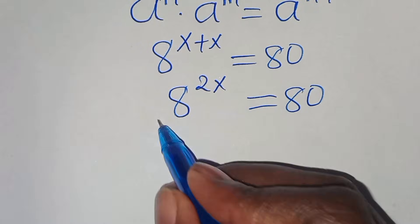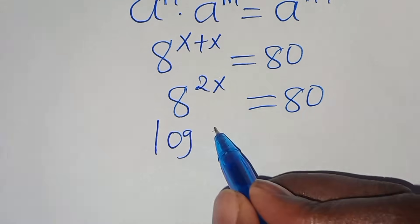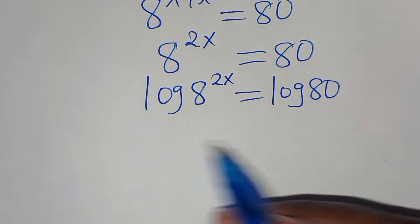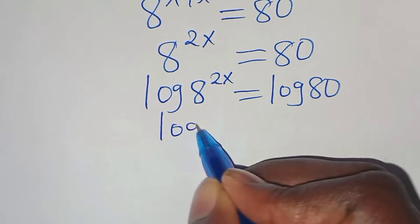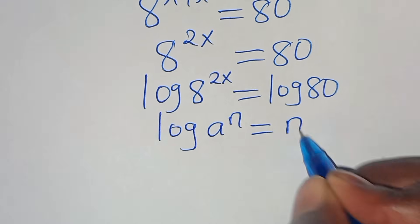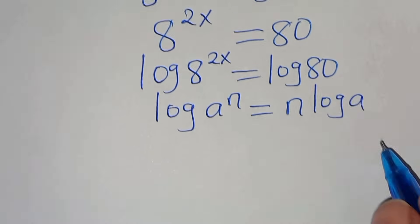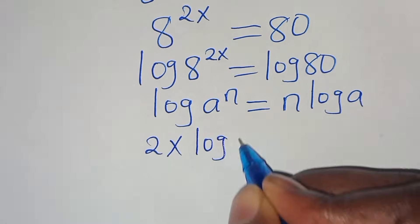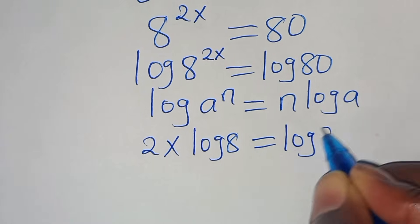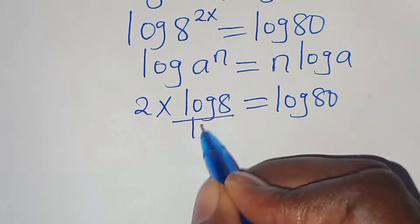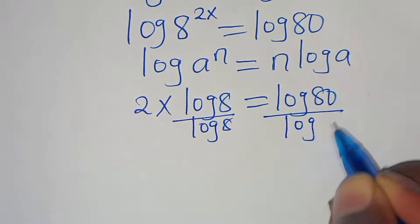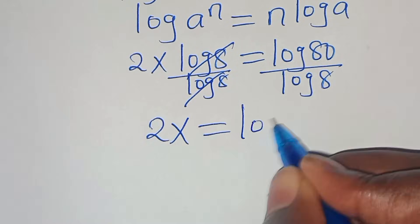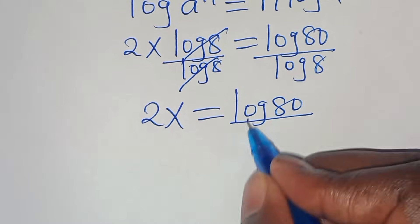Now to solve for x, we apply log to everything on both sides, so that we have log(8) to the power of 2x, which equals log(80). Log 8 to the power of 2x is in the form of log(a^n), which we can express as n·log(a). Applying this logarithm property, 2x·log(8) equals log(80). Dividing both sides by log(8), we have 2x equals log(80) divided by log(8).